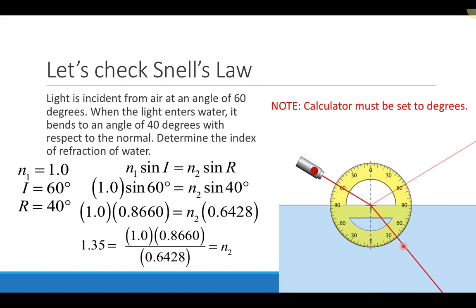Trying to read a protractor and get values exactly correct is very difficult, so those angles might not be exactly 60 or exactly 40, but the result gives us something very close to what we expect.